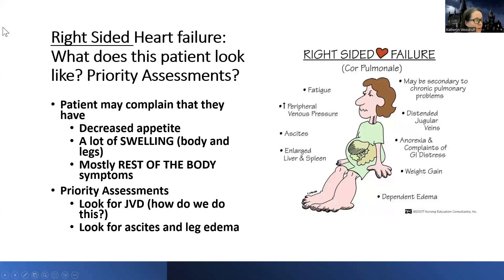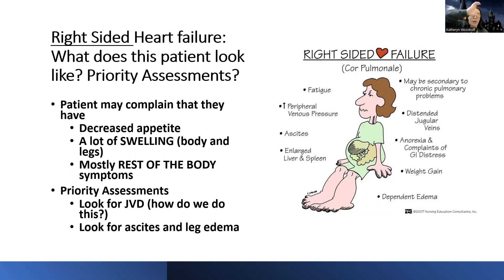On the other side, with right-sided heart failure — we talked about left having a traffic jam that backs up into the lungs. You have to know your anatomy to understand this. I have anatomy videos and assessment videos that talk about cardiac anatomy — feel free to watch those. With right-sided heart failure, think about the right ventricle: if there's an issue there, where would traffic back up? Into the right atrium and then the rest of the body — that's where the right-sided heart failure symptoms come up.